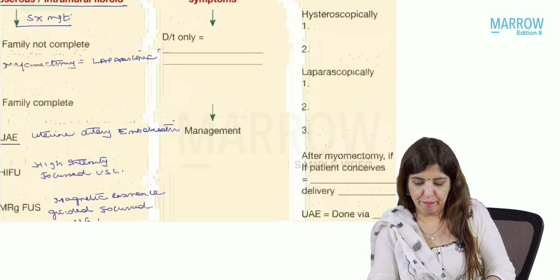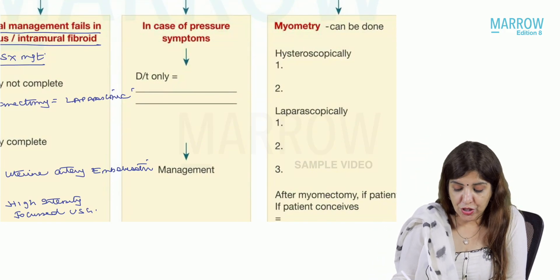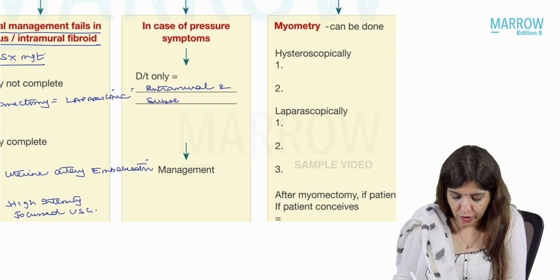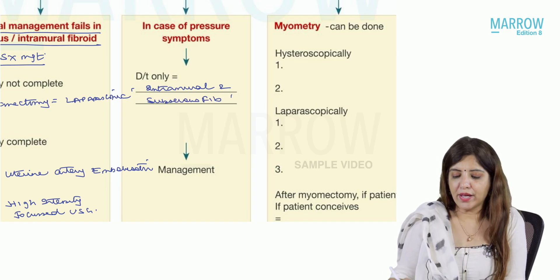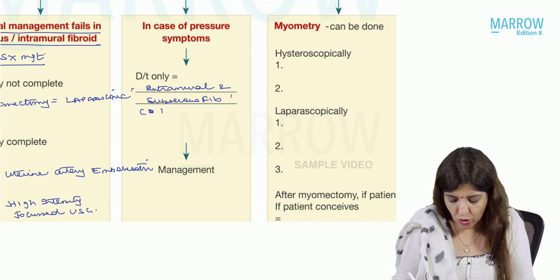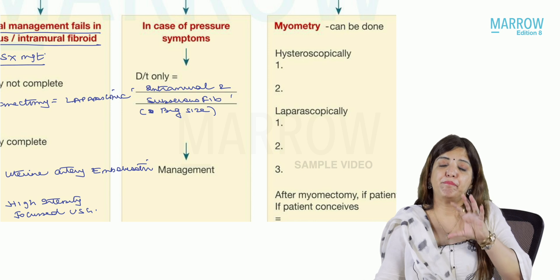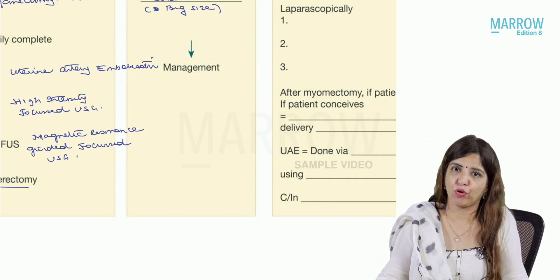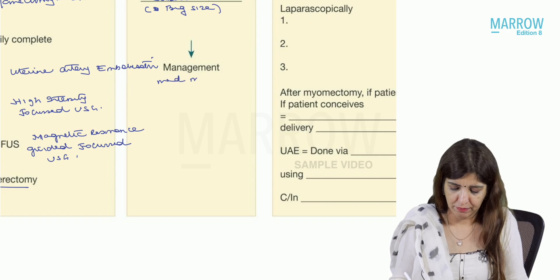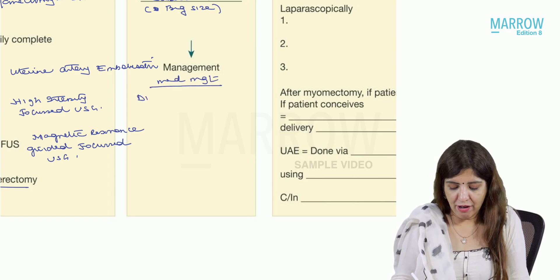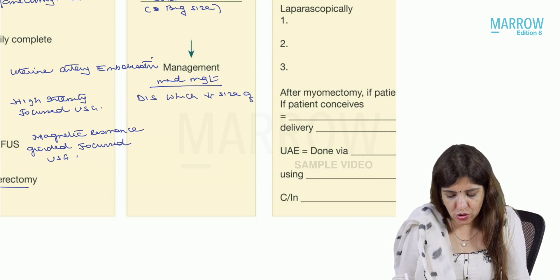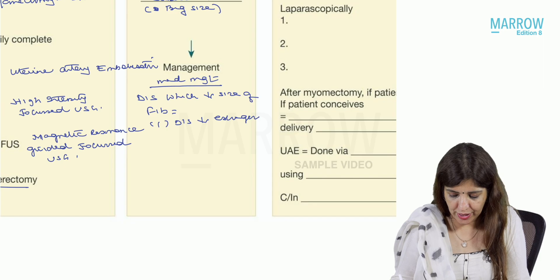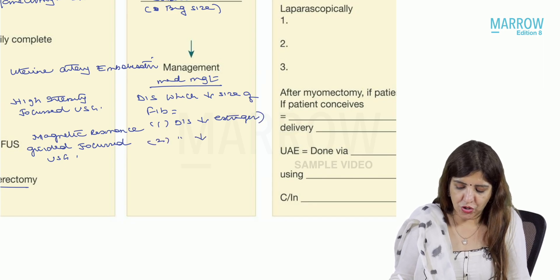Pressure symptoms are only due to intramural and subserous fibroid. Because pressure symptoms arise from large size of intramural or subserous fibroid, the first management step is medical management — giving drugs that decrease the size of the fibroid. That means giving drugs that either decrease estrogen or decrease progesterone, using the same lists already discussed.